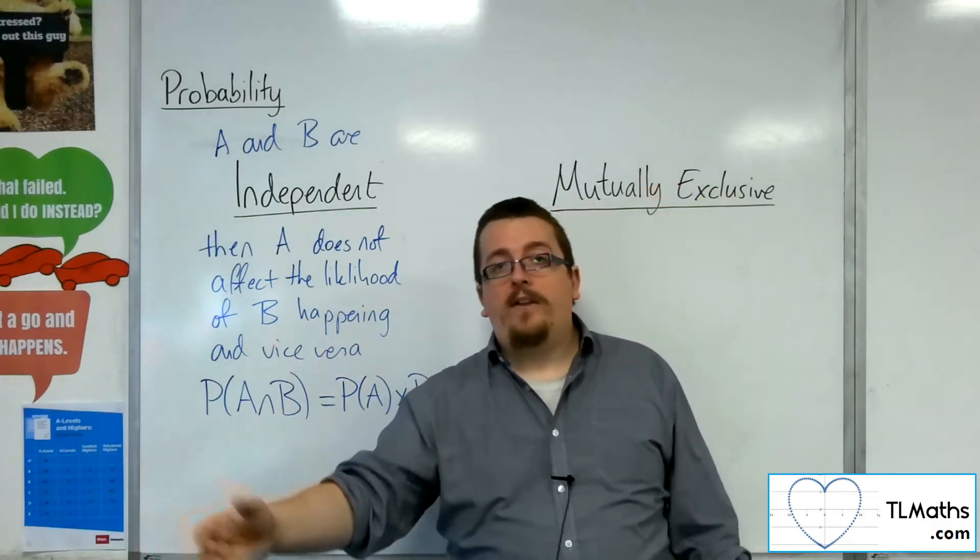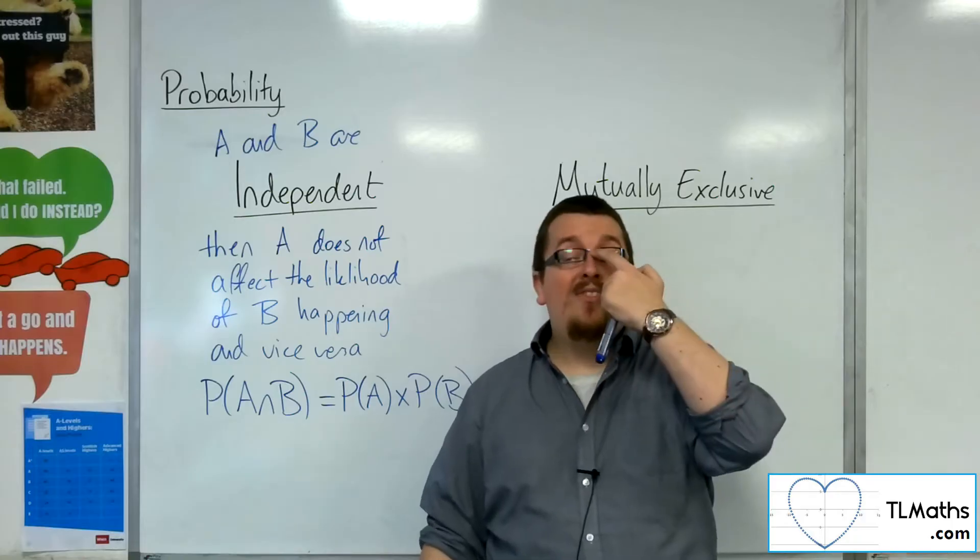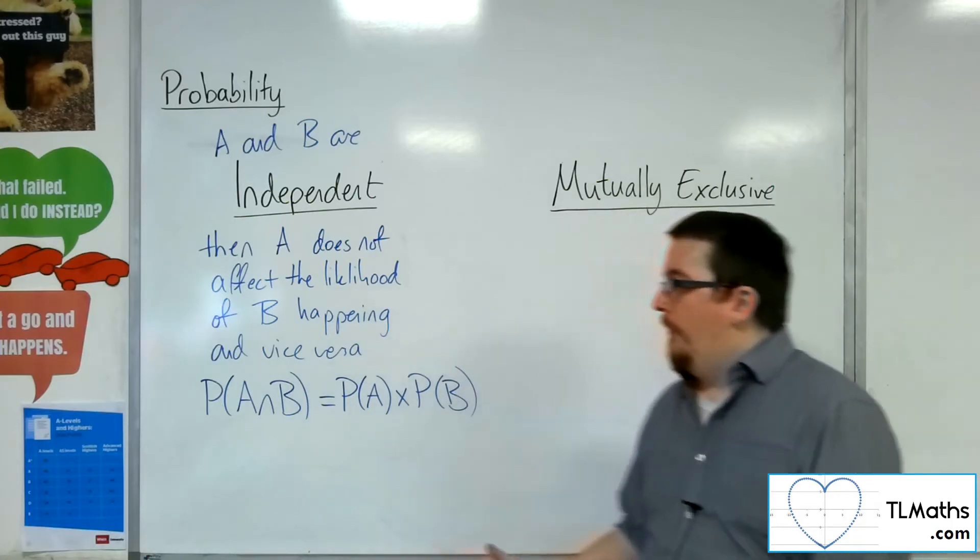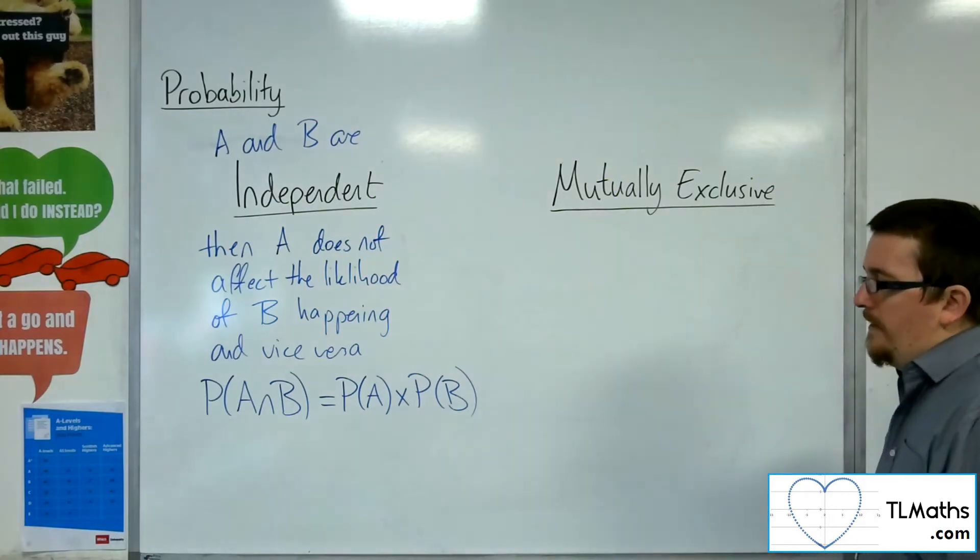So you'd have one-sixth times one-thirteenth, and that would be the probability of winning the game. So that is what independent means.